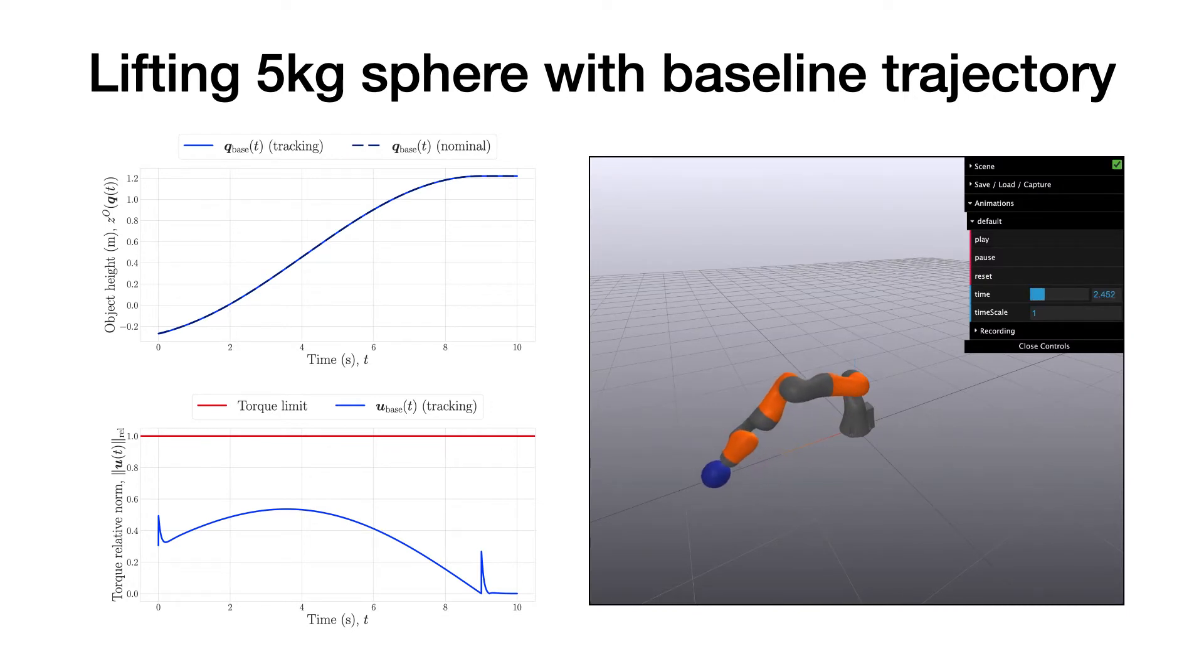Using the baseline trajectory, the robot arm can lift moderately heavy weight. This video clip shows the example of lifting a 5 kg sphere. The figure on the left shows the object height and torque magnitude as functions of time. Note that for the given weight, the baseline trajectory can be executed without torque limit violation.